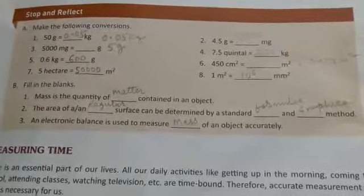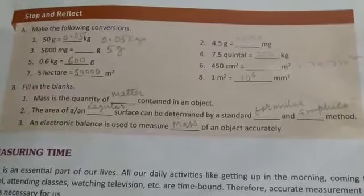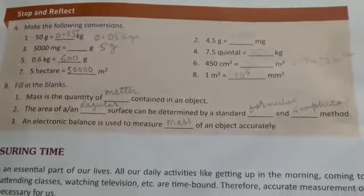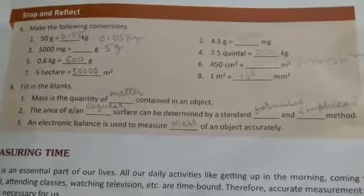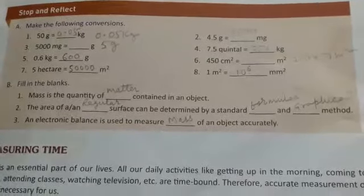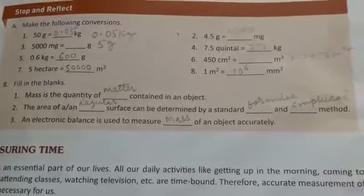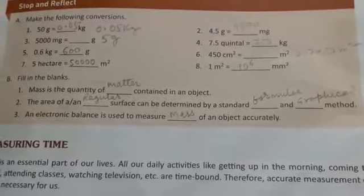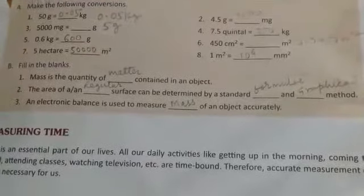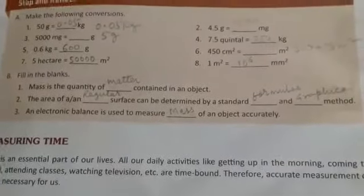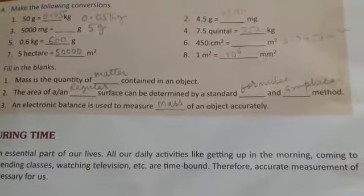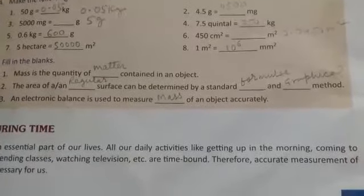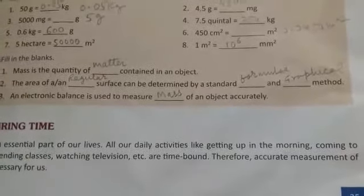Question number 2, the area of a dash surface can be determined by a standard dash and dash method. Answer is, the area of a regular surface can be determined by a standard formula and graphical method. Question number 3, an electronic balance is used to measure dash of an object accurately, mass of an object accurately.